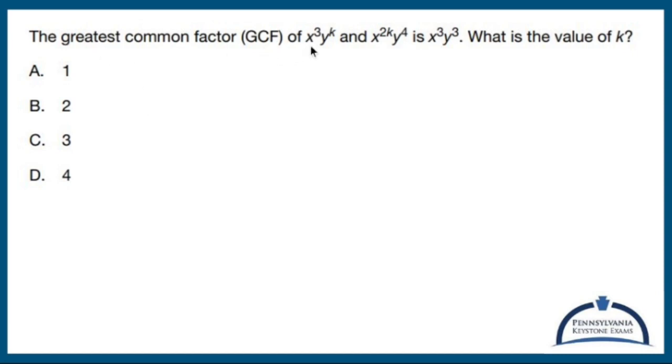The greatest common factor of x³y^k and x^(2k)y⁴ is x³y³. What is the value of k?